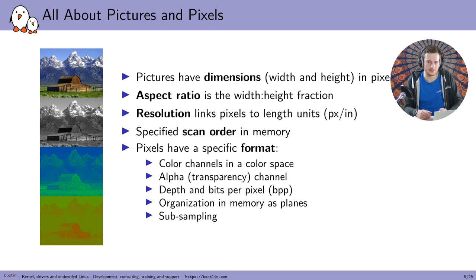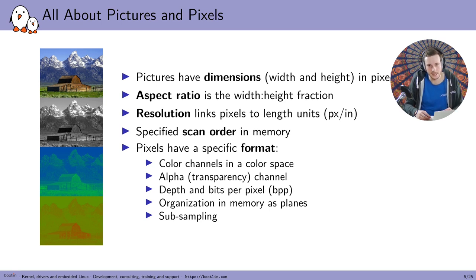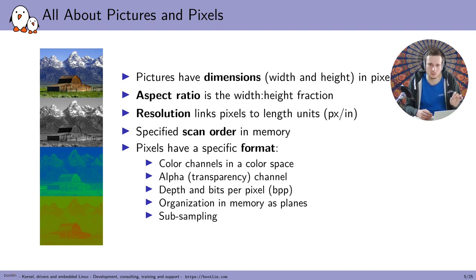Something else we need to understand is subsampling factors. Subsampling is the idea that we share one channel's information across different pixels. This is especially useful for YUV color models, which separate the luminance components from the color components. Because the human eye is more sensitive to luminosity than to color difference, it's possible to use one chroma value for a small number of pixels — like two or four. This means we have less color information than luminosity information, which usually makes little difference to the human eye.